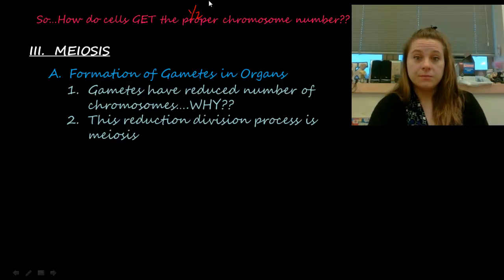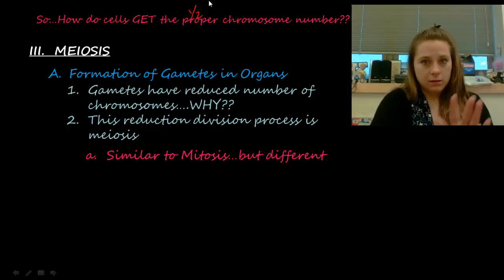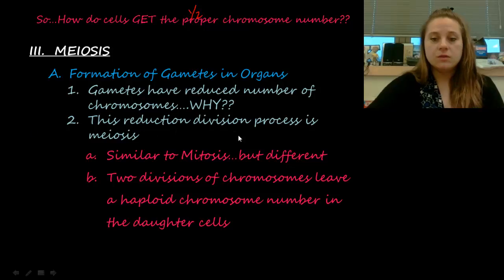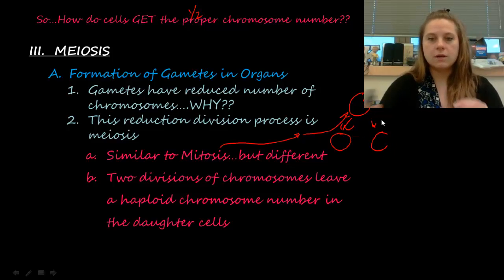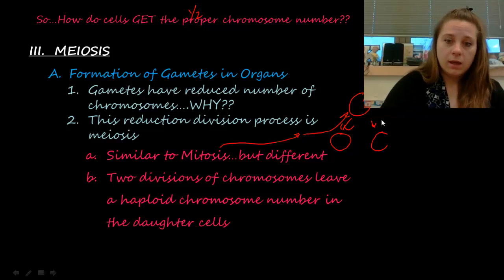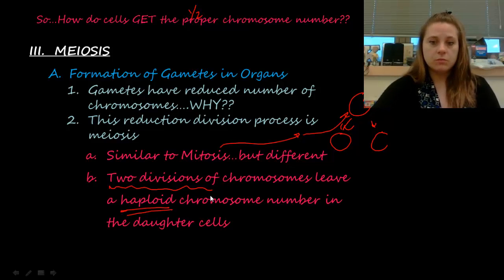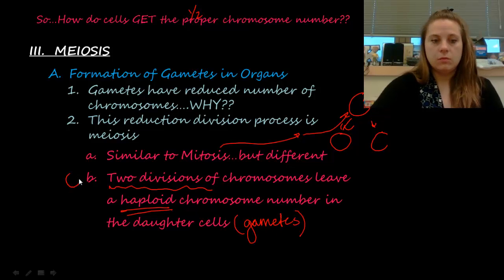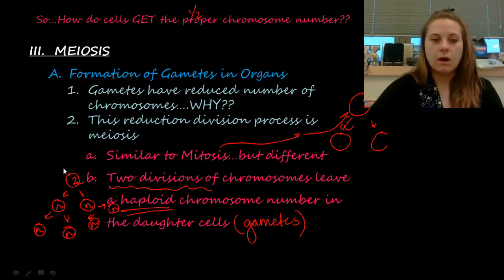Meiosis is a reduction process. Once cells divide and become the gamete, that's it — there's no more division after that. It is similar to mitosis but different. What makes it different is that mitosis has a single division: one cell divides into two. In meiosis we have two divisions, and at the end of that second division we are left with haploid chromosome counts in each of the daughter cells, which are our gametes. Remember, n is the variable we use to describe a haploid cell; 2n is diploid.